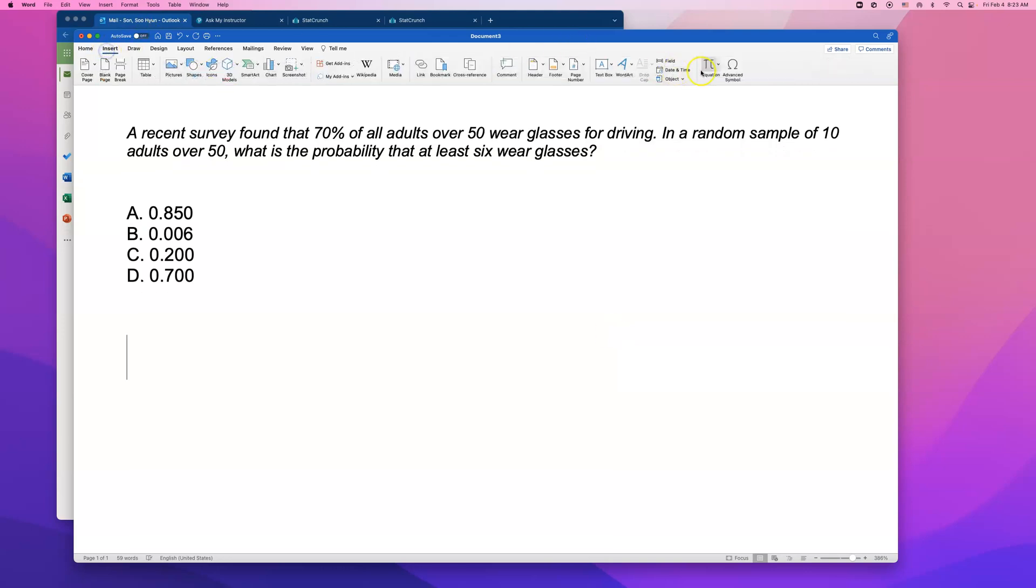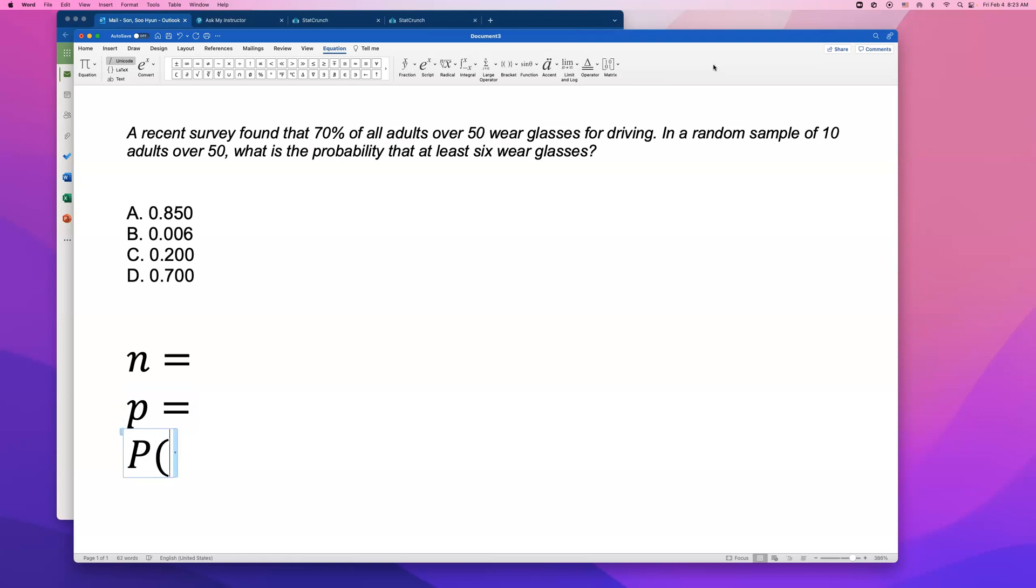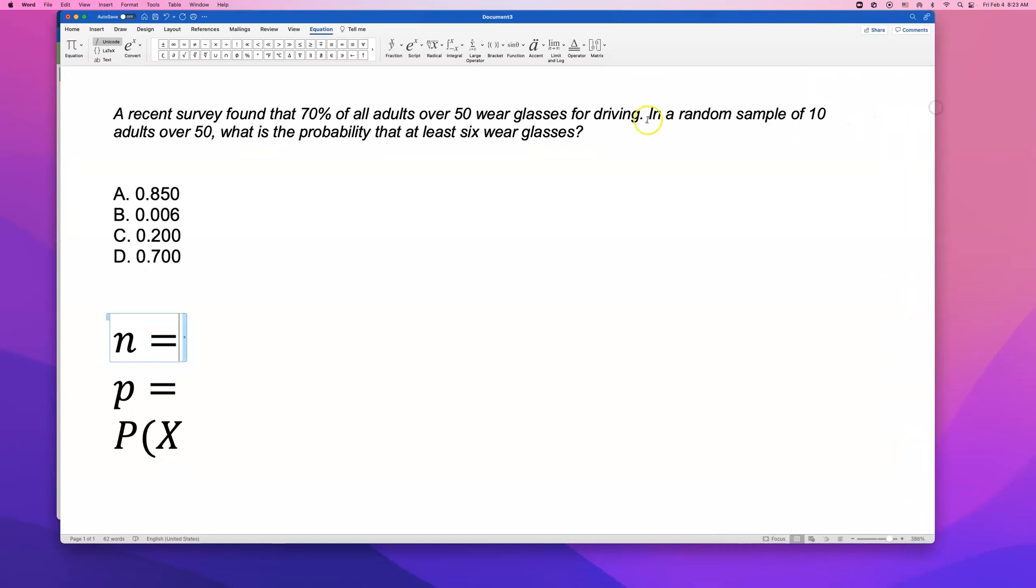But we have to identify what our n is, what our p is, and what we are trying to find. First of all, how many adults over 50 are we looking at? In a random sample of 10 adults, so n is 10. Because we're going to pick 10 adults over 50 and ask them, do you wear glasses when you drive? And their answer will be either yes or no.